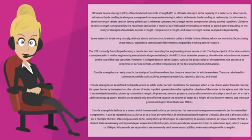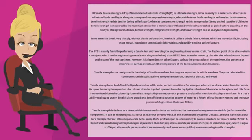Tensile strengths can be defined for liquids as well as solids under certain conditions. For example, when a tree draws water from its roots to its upper leaves by transpiration, the column of water is pulled upwards from the top by the cohesion of the water and the xylem, and this force is transmitted down the column by its tensile strength. Air pressure, osmotic pressure, and capillary tension also play a small part in a tree's ability to draw up water, but this alone would only be sufficient to push the column of water to a height of less than 10 meters, and trees can grow much higher than that — over 100 meters.